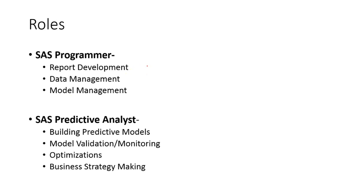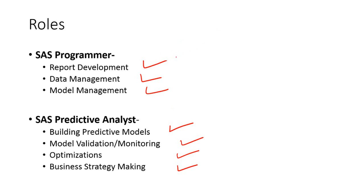As a SaaS Programmer, you work on report development, data management, and model management. As an analyst, generally we work on building predictive models, model validation, and monitoring. We do SaaS optimizations and we are also very closely involved with business strategy making. When I say SaaS Programming, I am not saying that a SaaS Programmer only does SaaS Programming or is not involved in the business or functional aspects. The SaaS Programmer work is primarily 90% Programming and 10% Analysis.